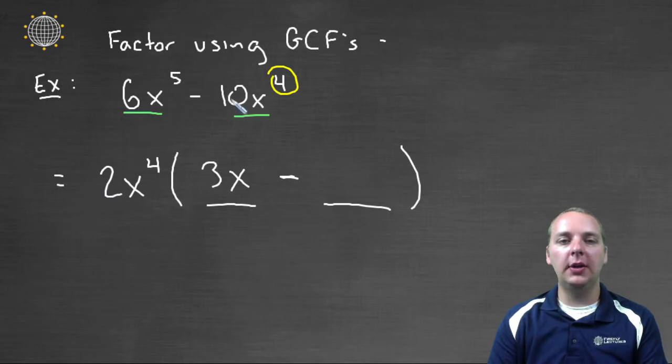And 2 times what would give you 10? That would be a 5. And x⁴ times what would give you x⁴? Just 1. And I already have a 5, so 5 times 1 would still be 5. And we're done.